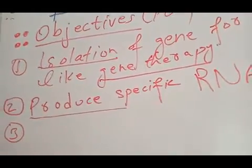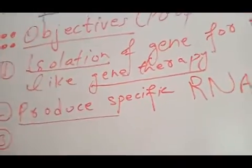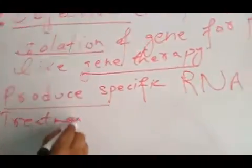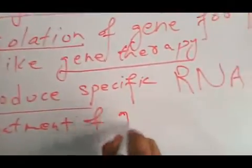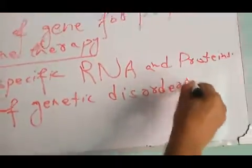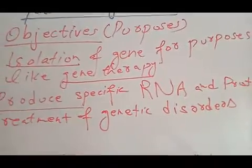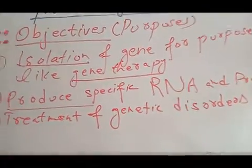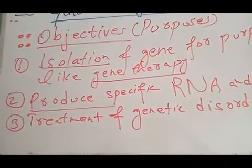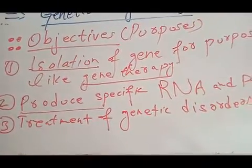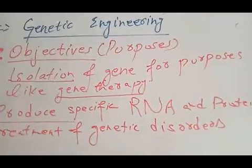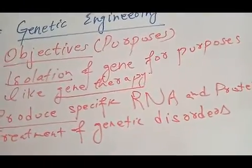The third objective of genetic engineering is the treatment of genetic disorders in higher organisms — in higher animals and in higher plants. Genetic disorders are disorders passed down through generations, transferred from parents to offspring or children. Such disorders can only be treated through genetic engineering.